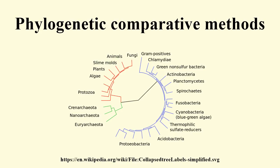Does a trait exhibit significant phylogenetic signal in a particular group of organisms? Do certain types of traits tend to follow phylogeny more than others? For example, are behavioral traits more labile during evolution? Do species differences in life history traits trade off, as in the so-called fast-slow continuum? For example, why do small-bodied species have shorter lifespans than their larger relatives?